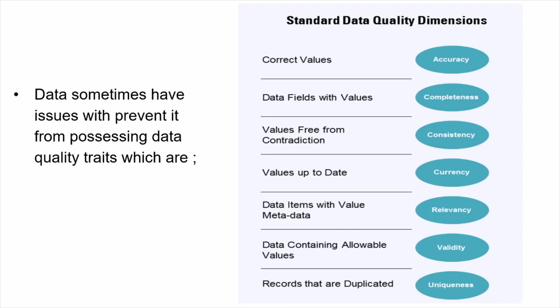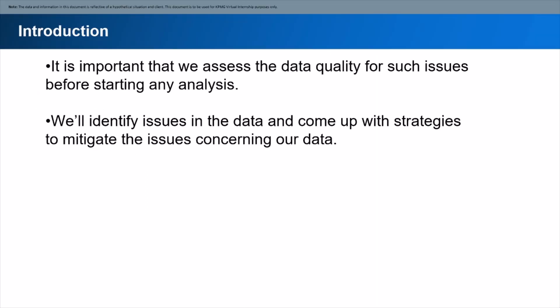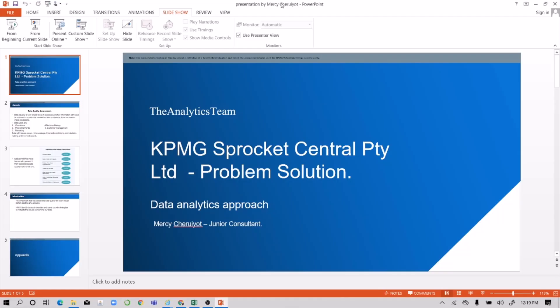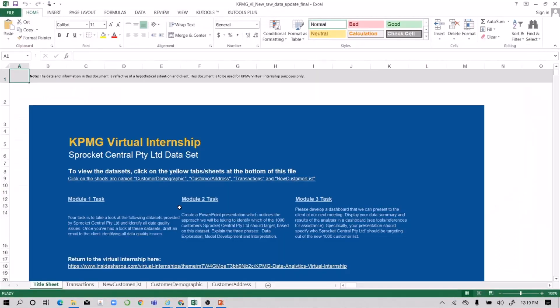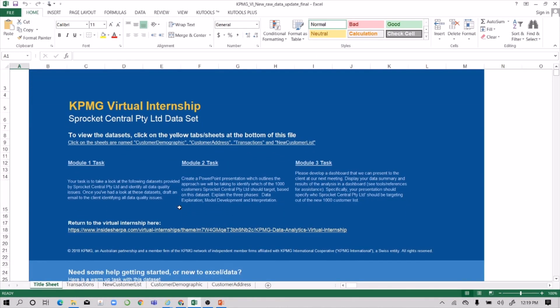Uniqueness is achieved when you remove duplicate records. It's also very important that we assess data quality for issues before starting any analysis. In this task we're going to check our data issues and come up with strategies to mitigate them.